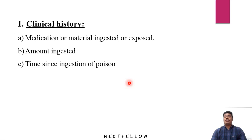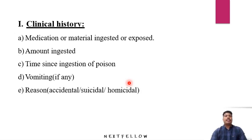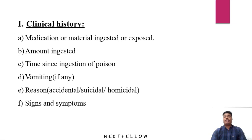The fourth point in clinical history is vomiting — if the vomitus contains blood, it suggests corrosion or perforation. Another important point is the reason: accidental, suicidal, or homicidal, which helps determine why the person took the poison and how justice can be served. Finally, signs and symptoms developed after ingestion of the poison are also recorded.